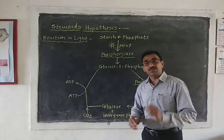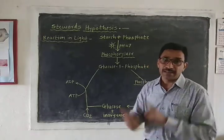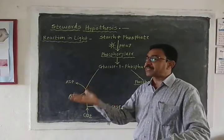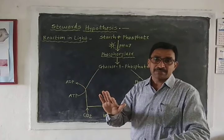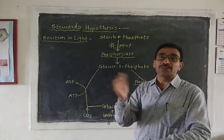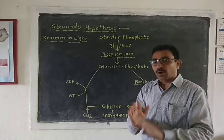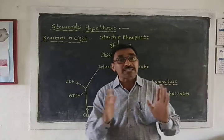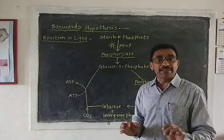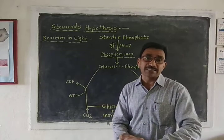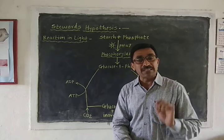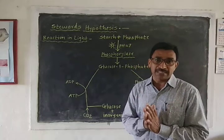The guard cells contain a strong solution while the subsidiary cells contain a weak solution. Hence, water molecules present in the subsidiary cells enter into the guard cells by the process of endosmosis. As a result, the osmotic pressure of the guard cell increases, and the diffusion pressure deficit — DPD — of the guard cell also increases, resulting in turgidity of the guard cells.